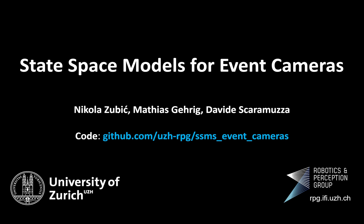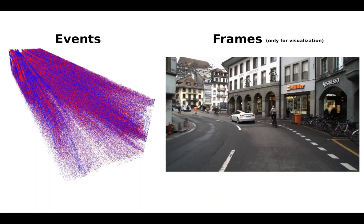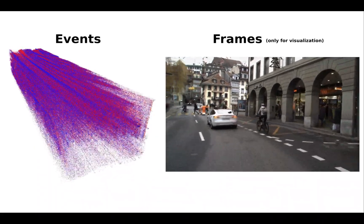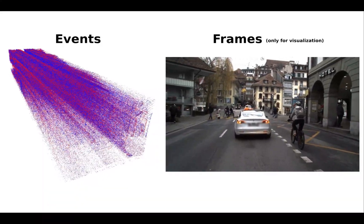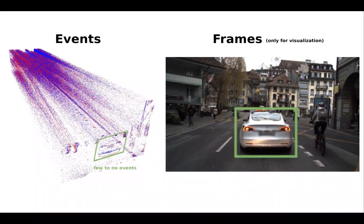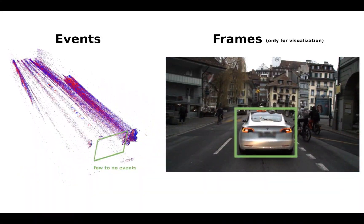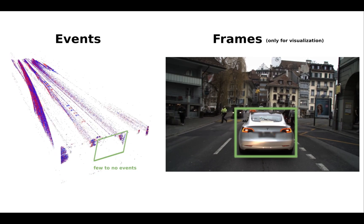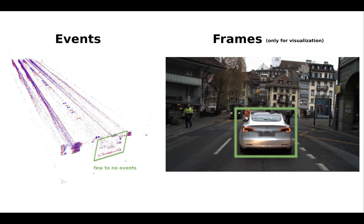We introduce state space models for event cameras. Event or neuromorphic cameras capture visual information with microsecond latency and high dynamic range. Their ability to asynchronously record changes in a scene makes them highly suitable for rapid object detection and tracking.